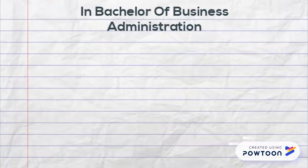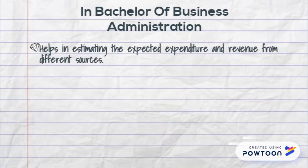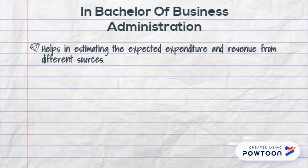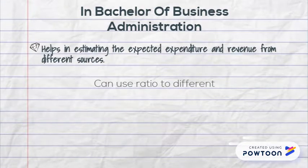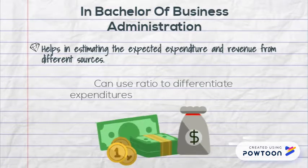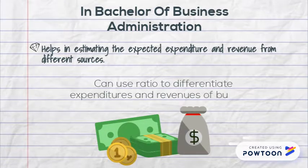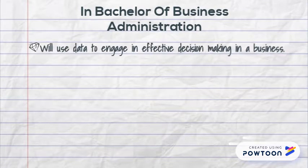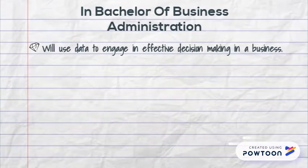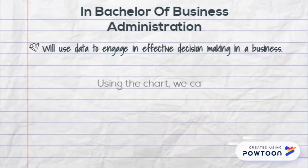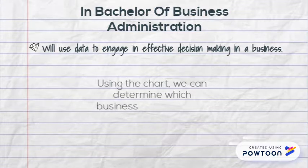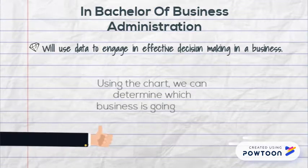In Bachelor of Business Administration, first, statistics helps in estimating the expected expenditure and revenue from different sources. We can use ratios to differentiate expenditures and revenues of the business. Second, we use data to engage in effective decision making. Using charts, we can determine which business is going well or not.